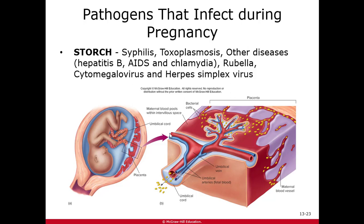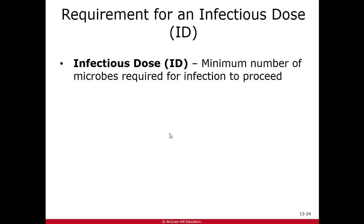Once it gets in, you also need a specific number of organisms — called the infectious dose — the minimum number of microorganisms required for infection to proceed. Just one or two bacteria usually isn't enough; your immune system would get rid of them. Different organisms have different infectious doses: some require just one organism to cause disease, others need millions. It can also vary with immune system health — a healthier person needs a higher infectious dose.